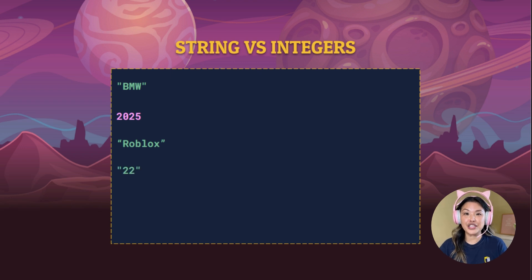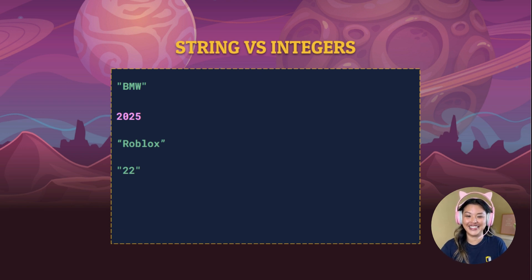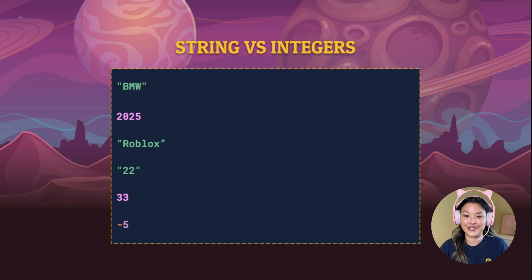How about 22 inside quotes? This one's a little tricky — you might think that it's an integer because we've got a whole number, 22, but because it's inside quotes, we know that it's a string. Okay, 33 — you don't see any quotes, so this one is an integer, it's a whole number. And negative 5 is also an integer. It is a whole number, even if it's negative.